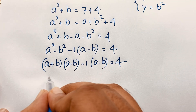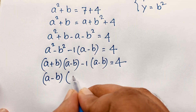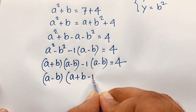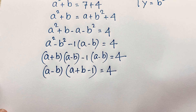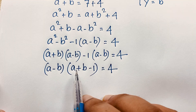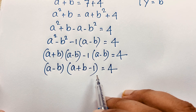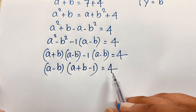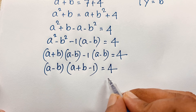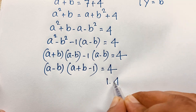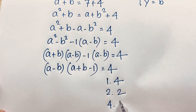Factoring out (a minus b): (a minus b) times (a plus b minus 1) equals 4. Now we find the factor pairs of 4: it can be 1 times 4, 2 times 2, or 4 times 1. So we have three cases to check.